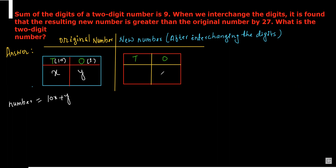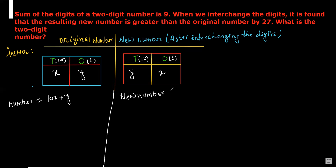After interchanging the digits, y becomes the tens place and x becomes the ones place. So the new number after interchanging is 10y plus x. It is given that the difference between the new number and the original number is equal to 27.